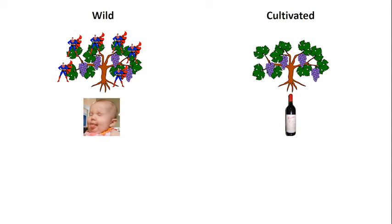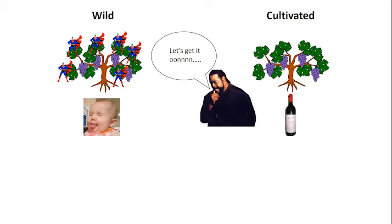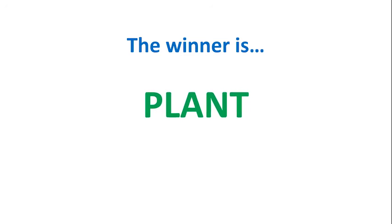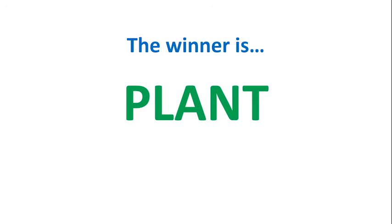Whilst this wild grapevine species is brilliant because it's resistant to the parasite, its berries produce really terrible wine. So what we need to do is move this resistance gene from the wild plant species into a cultivated variety such as Shiraz. This gene is moved through traditional plant breeding. After several generations and many crosses, my lab has developed a new grapevine variety. This variety is mostly Shiraz, it produces really excellent wine, but the plant also has this superhero resistance gene. And there are plans to release this variety and grow it commercially.